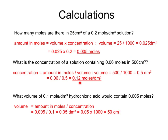Finally, what volume of 0.1 mol/dm³ hydrochloric acid would contain 0.005 moles? Everything is in correct units, so volume = moles ÷ concentration = 0.005 ÷ 0.1 = 0.05 dm³. Converting to cm³ by multiplying by 1000 gives 50 cm³.